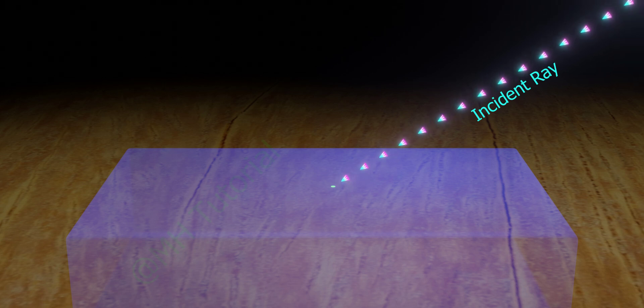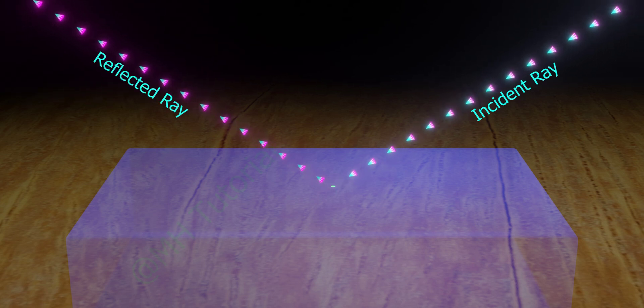Before explaining the laws of reflection, let's see some terms related to reflection. The ray of light that approaches the interface is called the incident ray, and the ray that reflected back is called reflected ray.